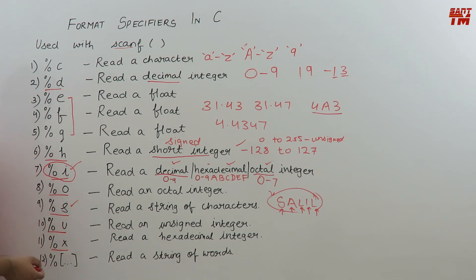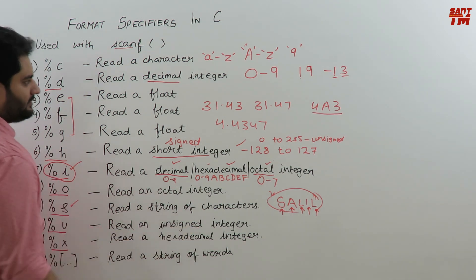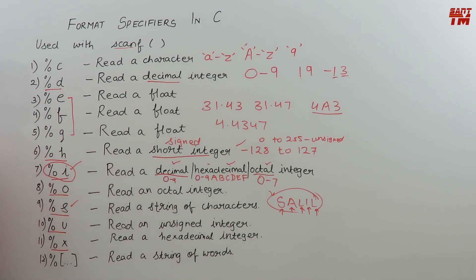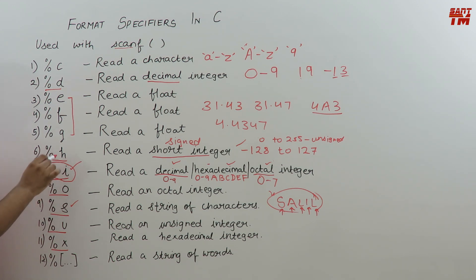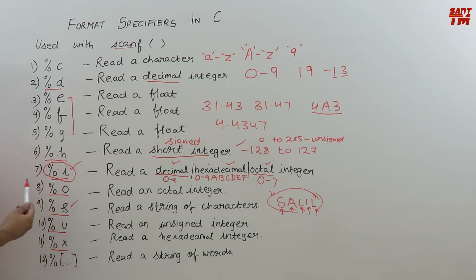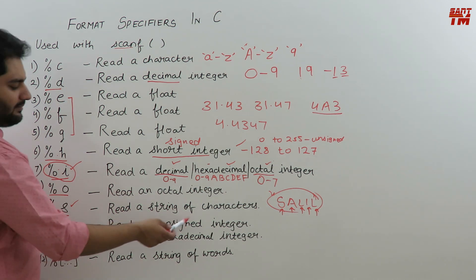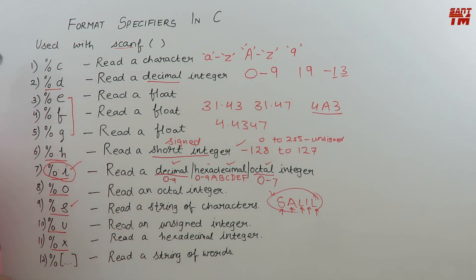%u is used to read an unsigned integer. While %d can read both signed and unsigned integers, if you want to specifically read an unsigned integer, you use %u. Only unsigned integers can be read by %u.